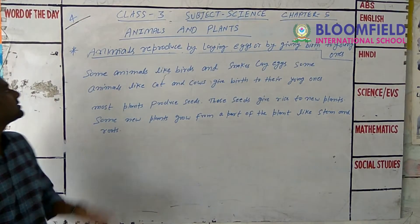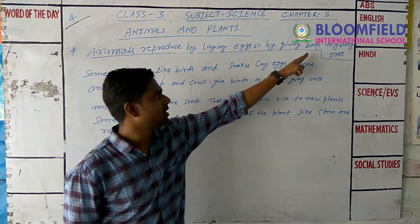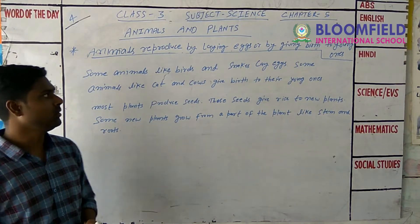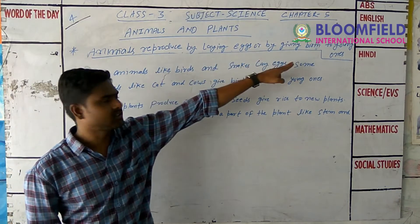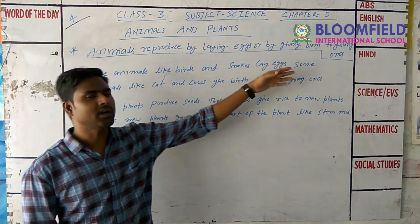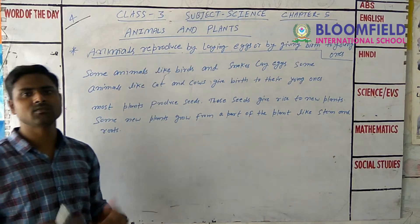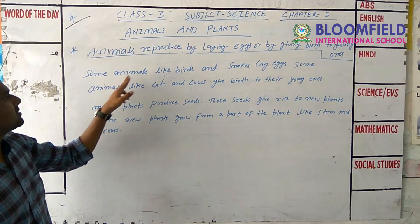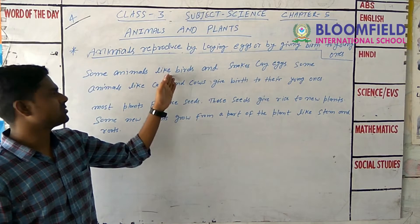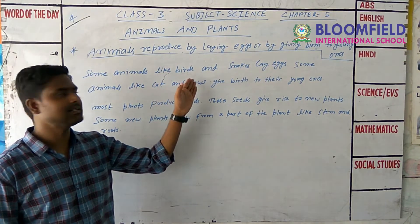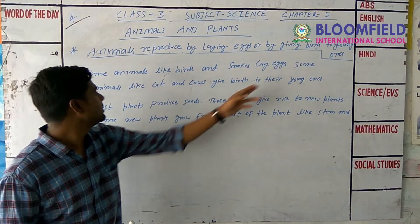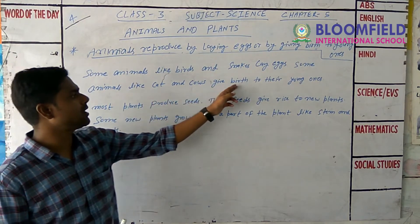Our next topic is: Animals reproduce by laying eggs or by giving birth to young ones. Some animals like birds and snakes lay eggs. Animals like cats and cows give birth to their young ones.